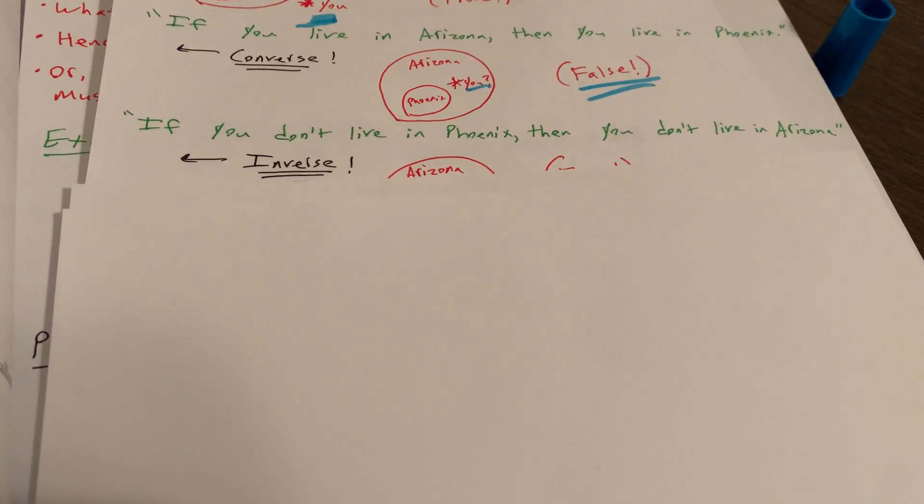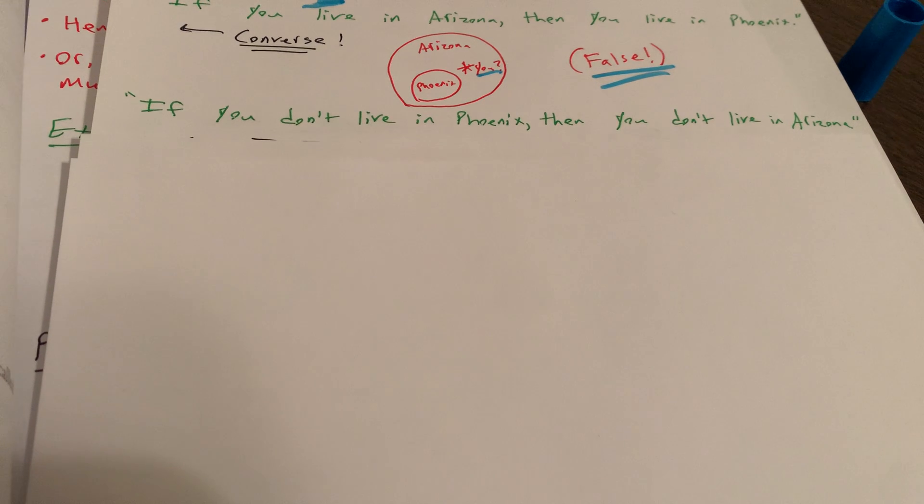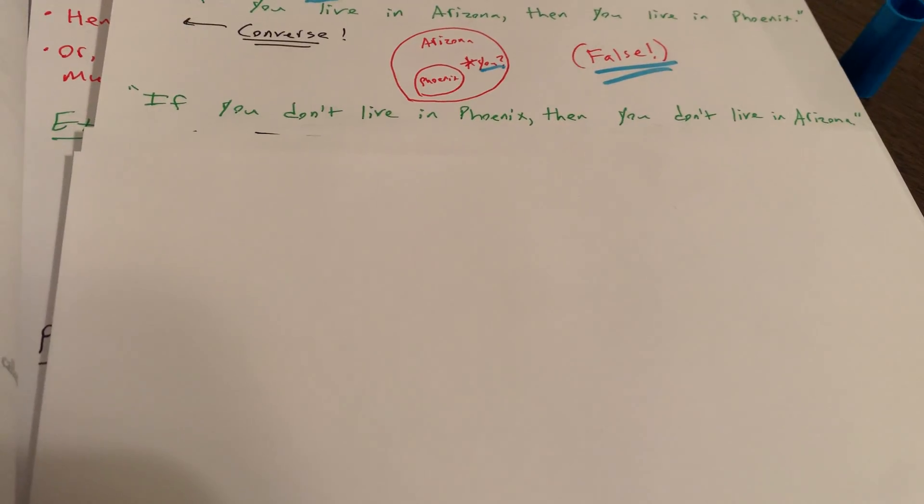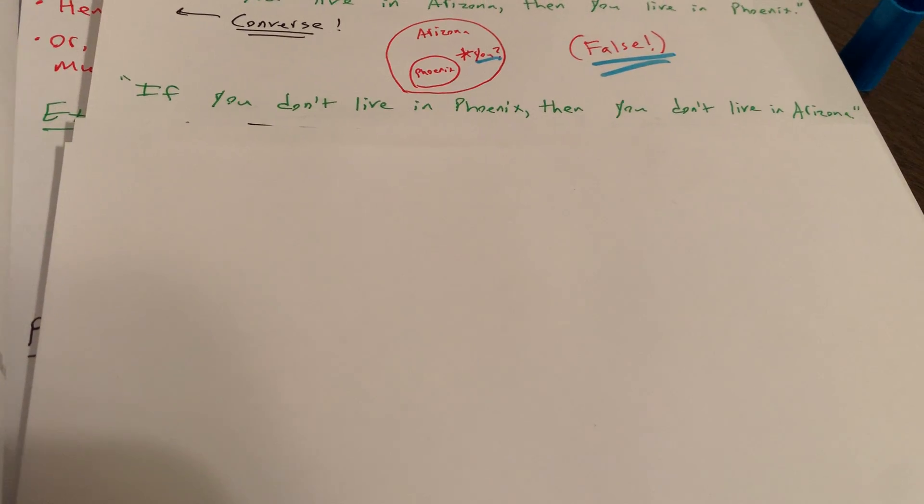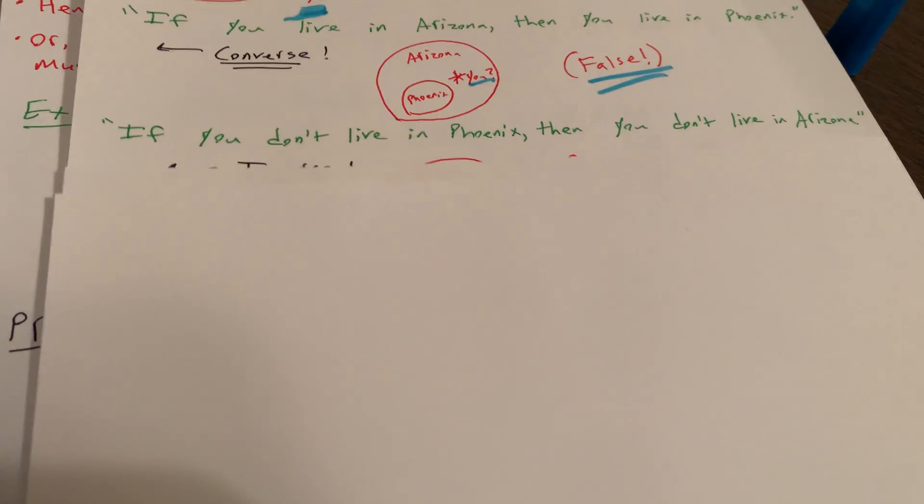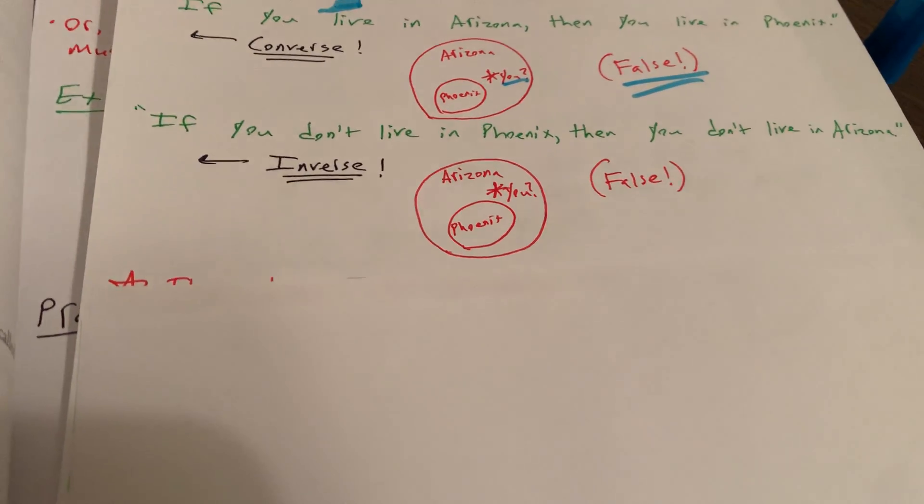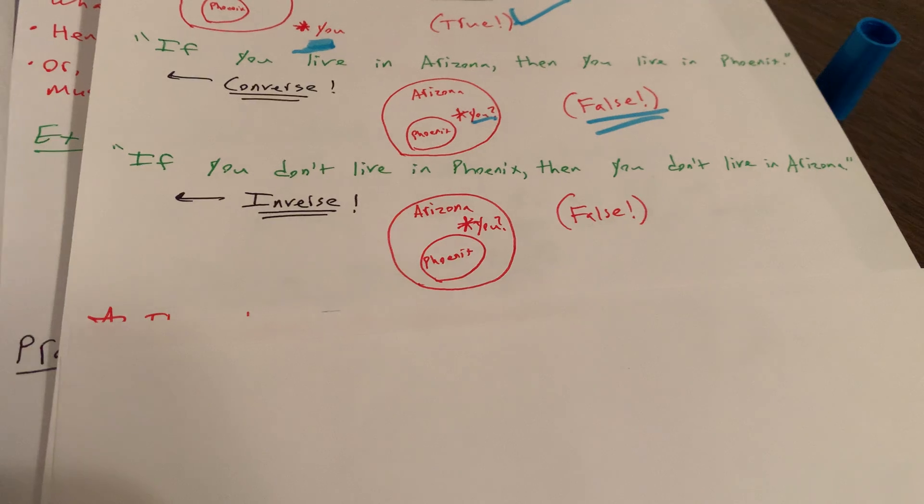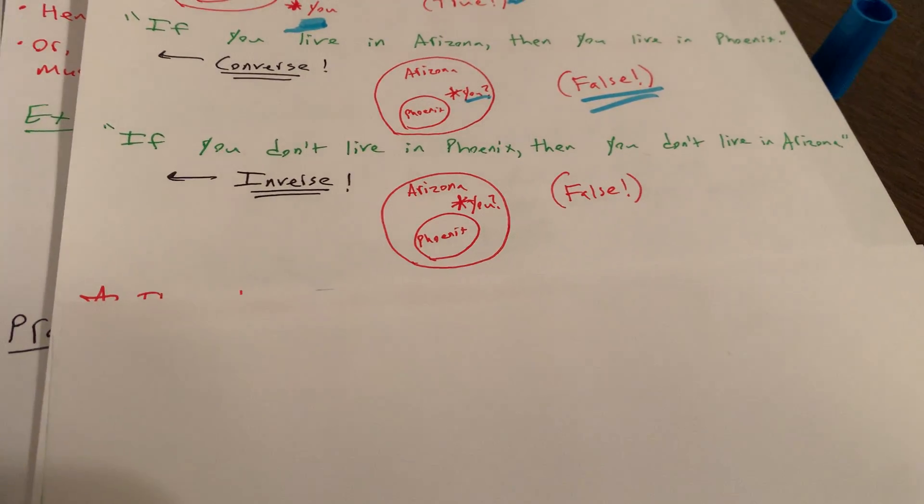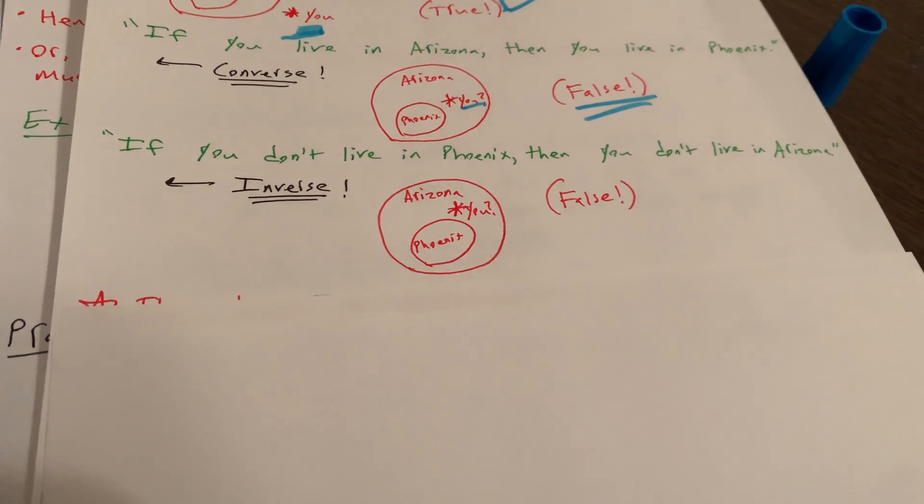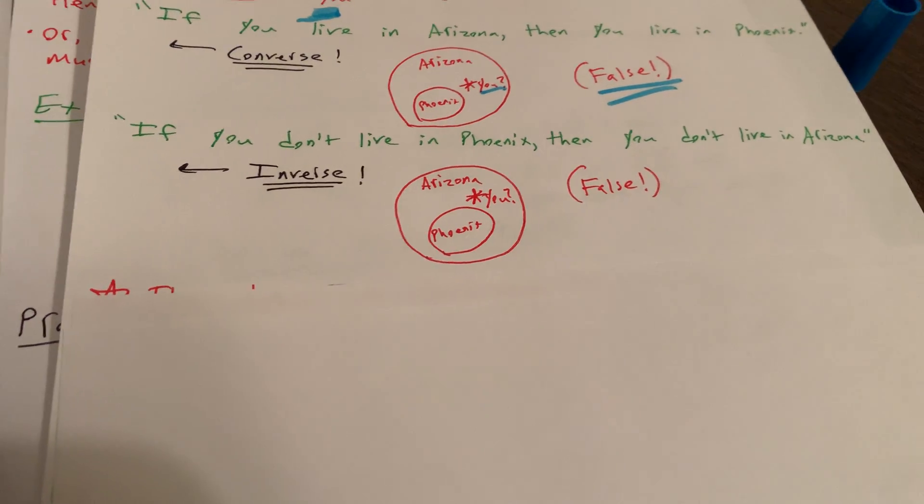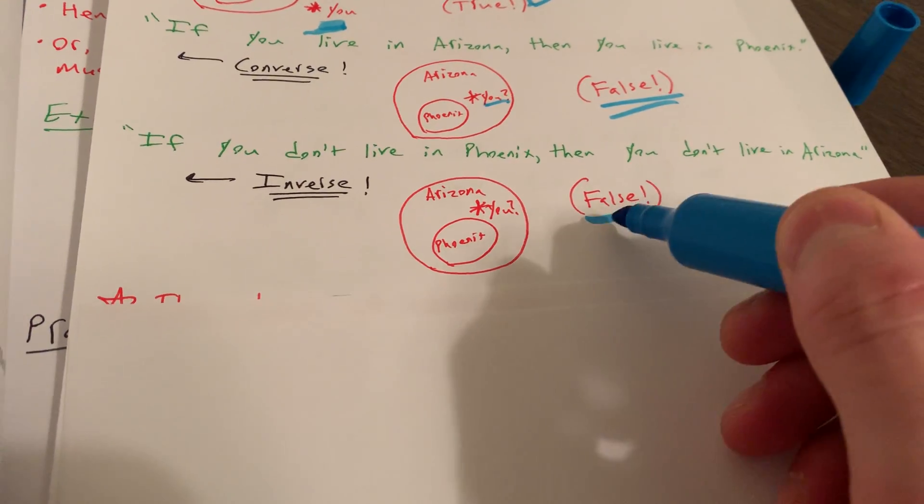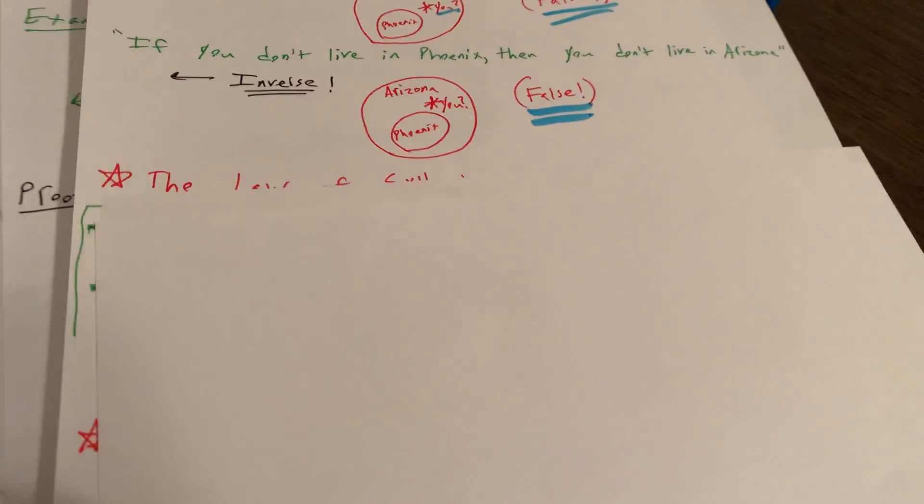Here's the inverse. If you don't live in Phoenix, then you don't live in Arizona. Would that be true or false? Well, again, it would be false, the inverse. And the same diagram really can represent this example. So maybe you live in Flagstaff. You're still living in Arizona. So this is a false proposition, a statement.